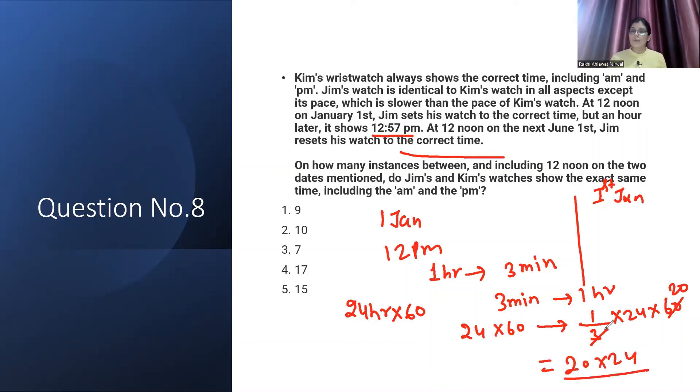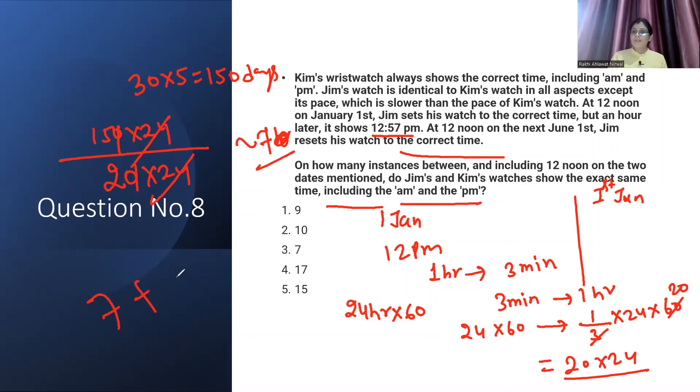Now see how much time is between first January and first June. January is full, then February, March, April, May, June. Don't count June, five months. Approximately, count individually or use 30 as average, there won't be much difference. It's 150 days. 150 days means 24 times 150 hours. We need to see after how much it loses, because it loses one full day according to 20 times 24. So this will come to approximately 7 times. And you have to include both AM and PM, so two times for first January and first June, so nine times. Nine instances will occur when it shows the correct time.